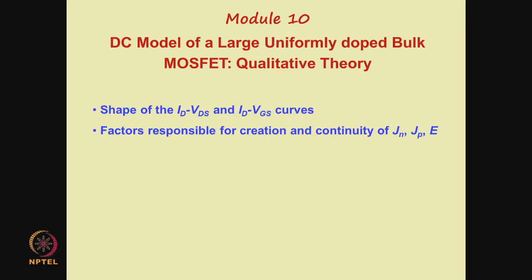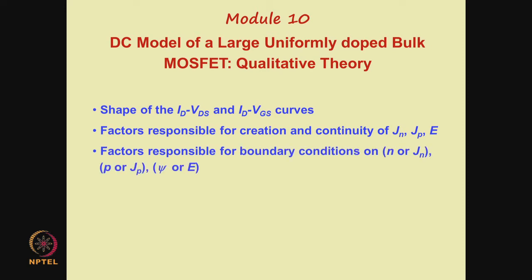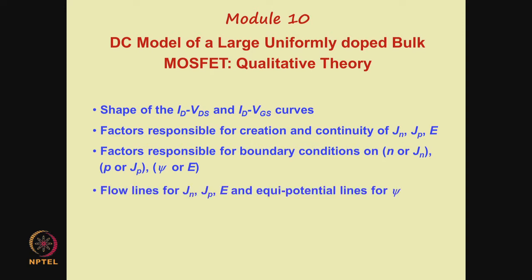Then we shall consider the factors responsible for creation and continuity of Jn, Jp and E. We will consider the factors responsible for boundary conditions on n or Jn, P or Jp, and psi or E. Finally, we shall sketch the flow lines for Jn, Jp, E and equipotential lines for psi.